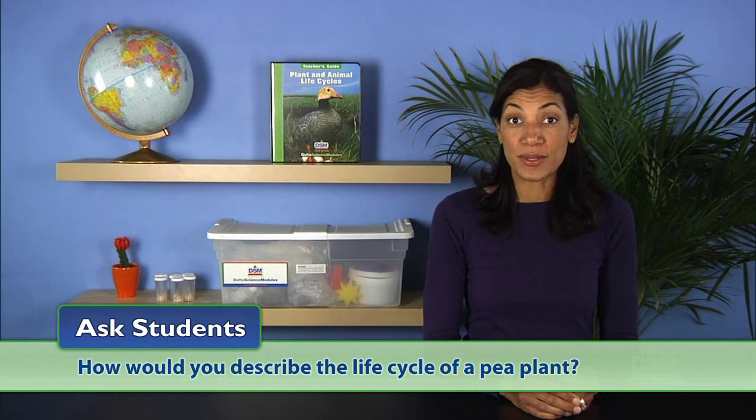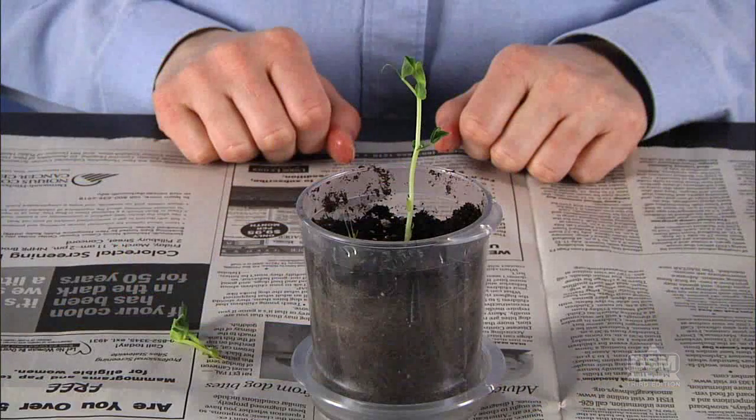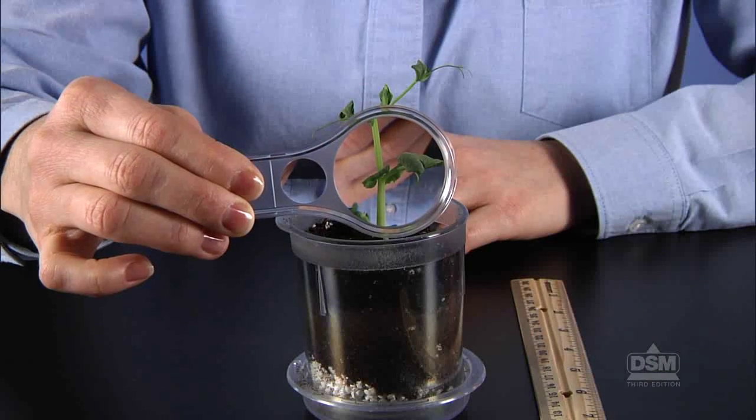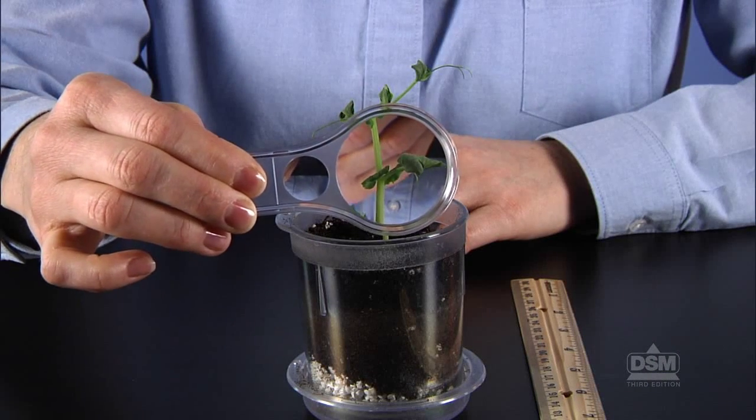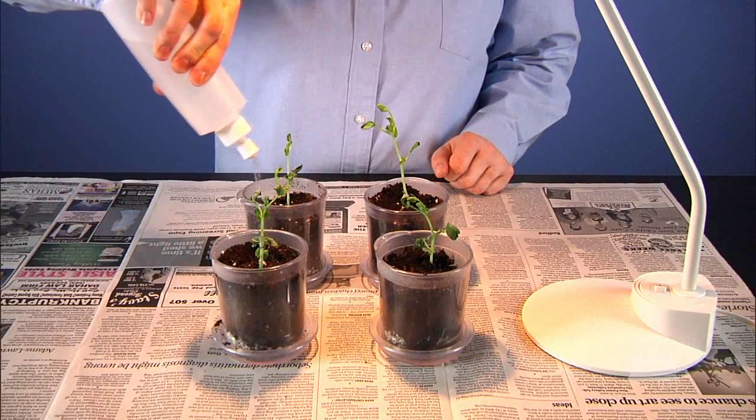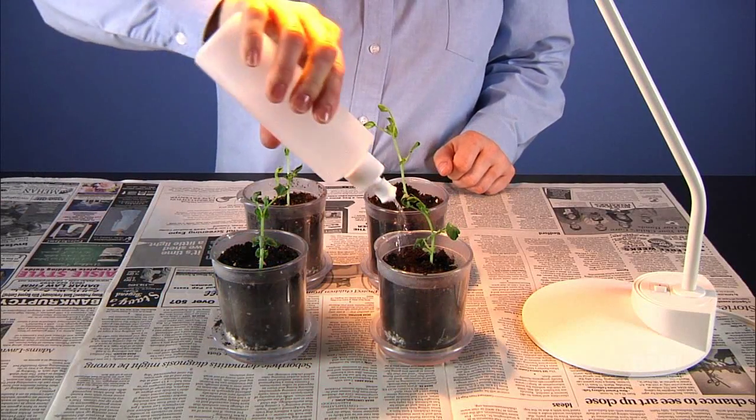Ask students, how would you describe the life cycle of a pea plant? Help students describe how a seed sprouts and grows into a seedling. The seedling grows into a mature plant that produces flowers, and then the flowers produce seeds. Finally, the seeds grow into new plants, completing the life cycle.